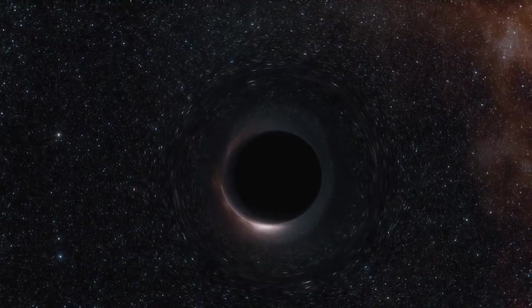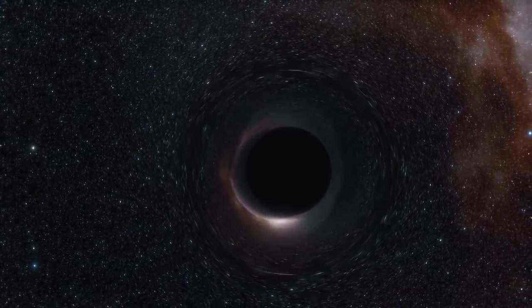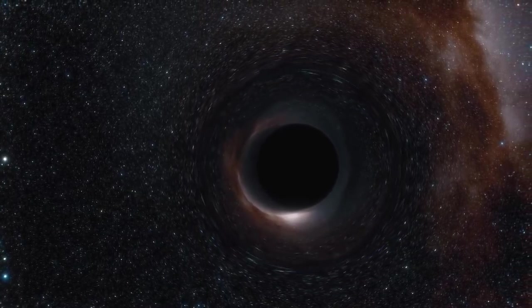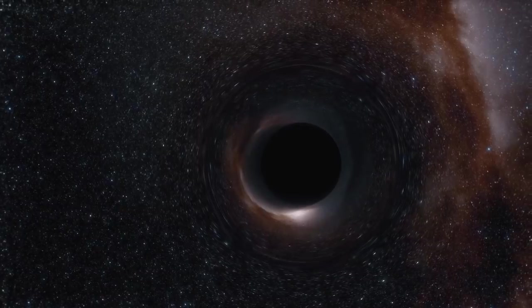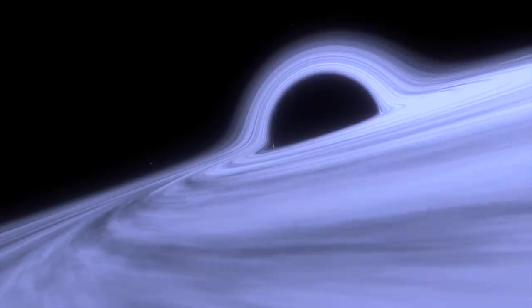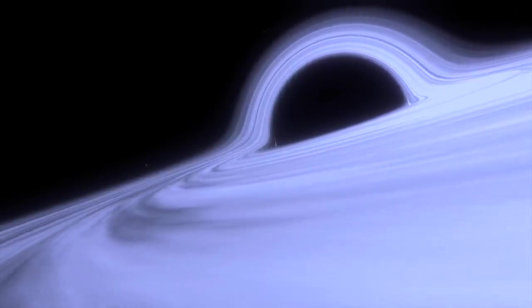That is a staggering number and there's no real way to comprehend something of that scale. However, it is fascinating nonetheless. You might be wondering how something as massive as this ultra massive black hole could even exist within a galaxy given the size of our own. Well, Holm 15A is a giant galaxy known as an elliptical galaxy.